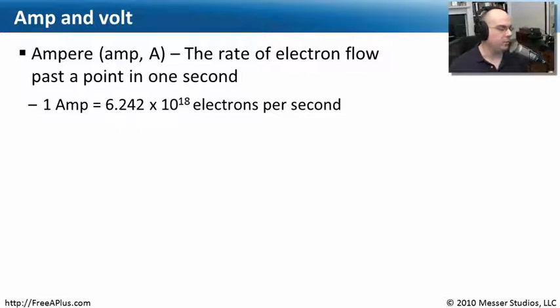An ampere, or abbreviated amp, or as a capital A, is the rate of electron flow past a single point in one second. If you were to count amps going by, the number of electrons going by, one amp would equal 6.242 times 10 to the 18th power of electrons per second going by a single point.